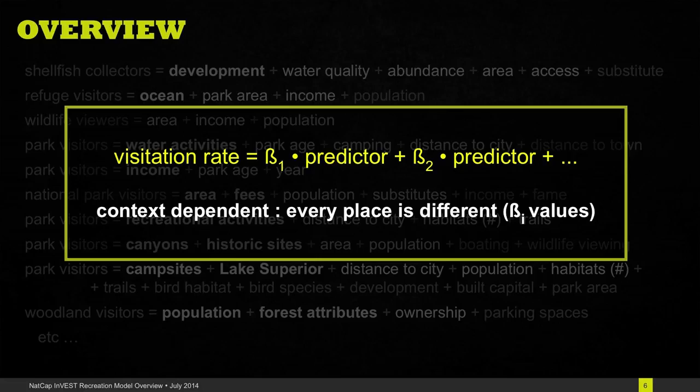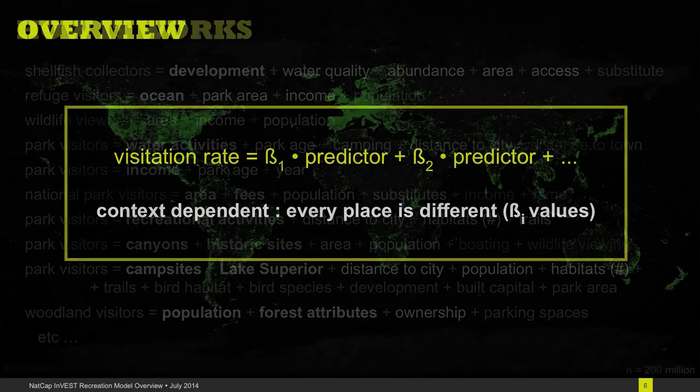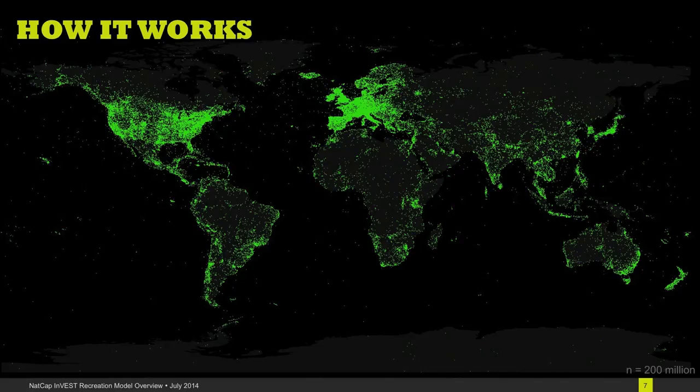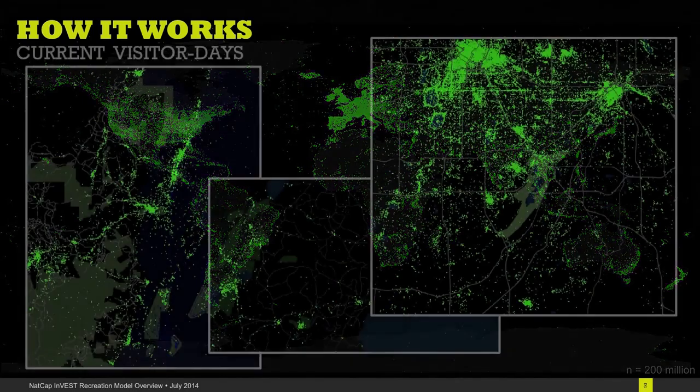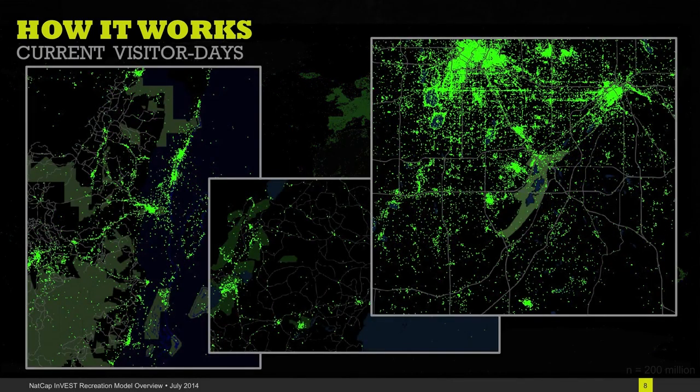At the Natural Capital Project we've been looking into proxy data that we can use to measure visitation to any place and we've discovered that the number of photographs that people take and post to the online website Flickr are a good substitute for data on visitation to any particular site. If we look for example at the coast of Belize on the left or downtown Minneapolis in the United States on the right we can see that people are uploading photos of their trips and each of these photos is given a GPS coordinate and a date and time they were taken and we can use this information to estimate visitation rates all around the world.